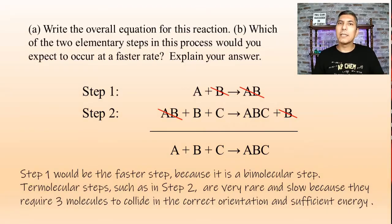In fact, we can say that step one is going to be the faster step because it is a bimolecular step. These termolecular steps like we see in that second step are very rare. And if they do take place, they tend to be quite slow because they require three molecules to collide in the exact orientation and at the exact same time and with enough energy. And that's highly unlikely as it turns out. So the fact is that step two is most likely going to be the slow step and step one is going to be the fast step.